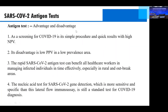The advantages and disadvantages of the SARS-CoV-2 antigen test: as a screening tool for COVID-19, the antigen test offers a simple procedure and quick results with high NPV (high negative predictive value). Its disadvantage is a low positive predictive value in low prevalence areas. The rapid antigen test can benefit healthcare workers in managing infected individuals in a timely and effective manner, especially in rural and outbreak areas. The nucleic acid test remains the standard test for COVID-19 diagnosis, being more sensitive and specific than this lateral flow immunoassay.